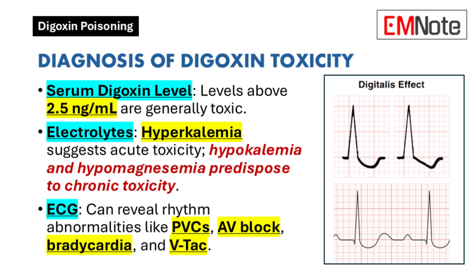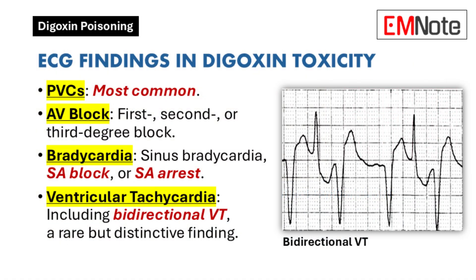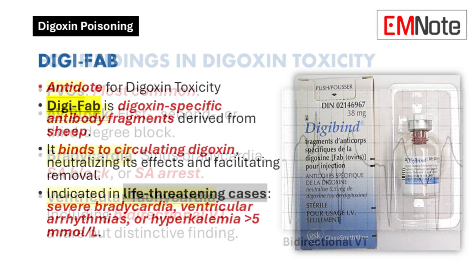Electrolytes are also crucial, especially potassium. Hyperkalemia often suggests acute toxicity, while hypokalemia and hypomagnesemia can make chronic toxicity worse. Finally, we need an electrocardiogram to identify heart rhythm abnormalities. The most common finding is premature ventricular contractions. We might also see atrioventricular block, bradycardia, ventricular tachycardia, or even bidirectional ventricular tachycardia.